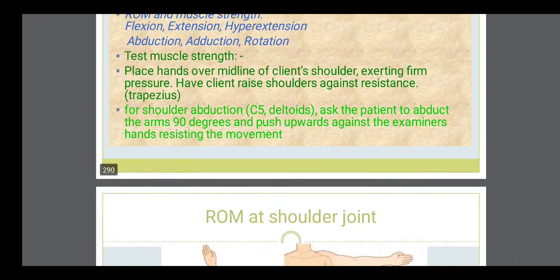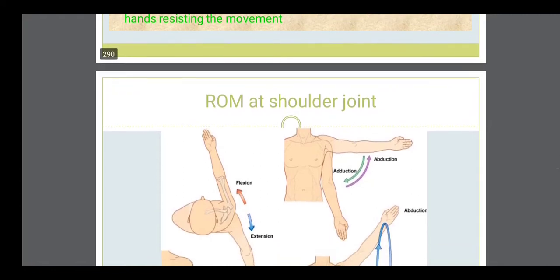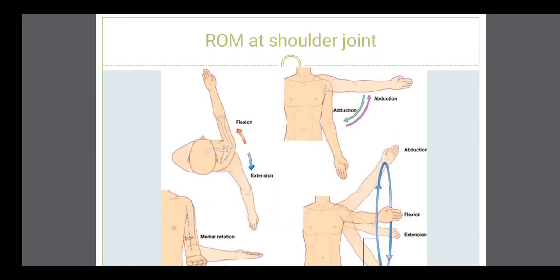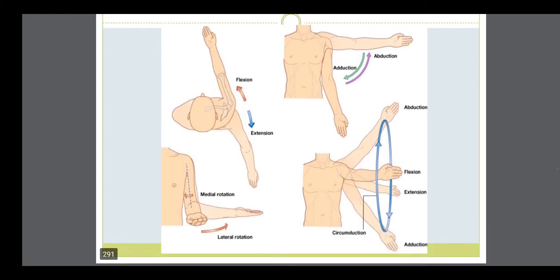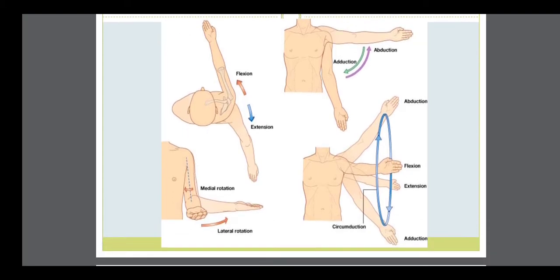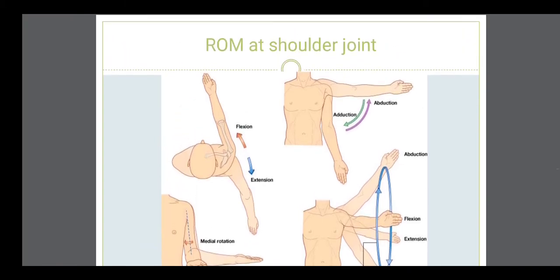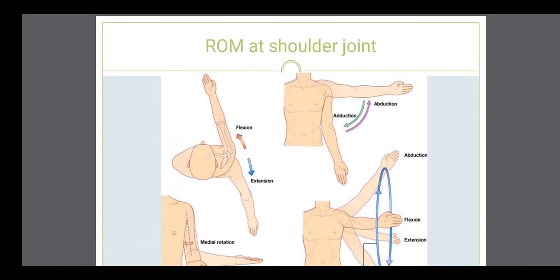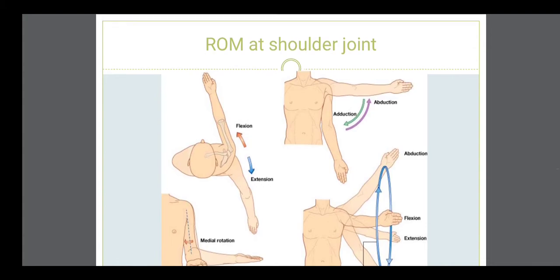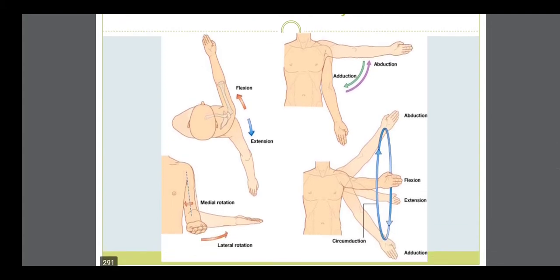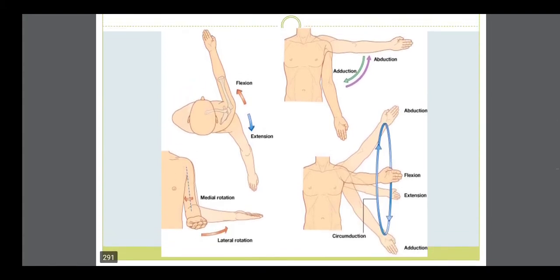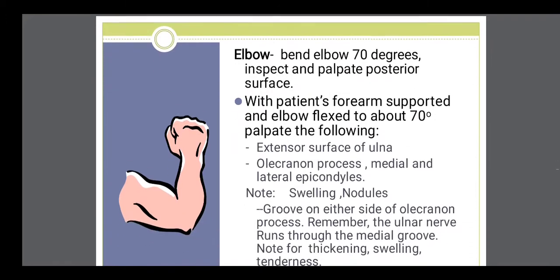Shoulder: the range of motion exercises include flexion, extension, abduction, adduction, circumduction, medial rotation, and lateral rotation. These all range of motion movements are performed at the shoulder joint, which is a freely movable joint.